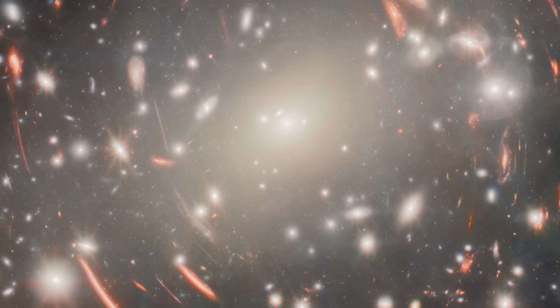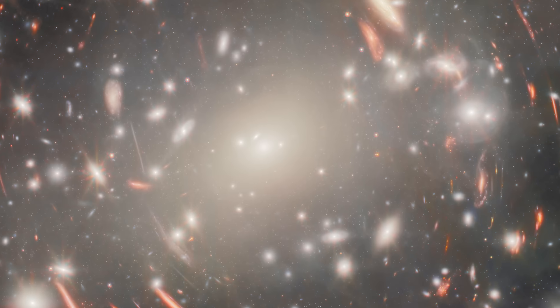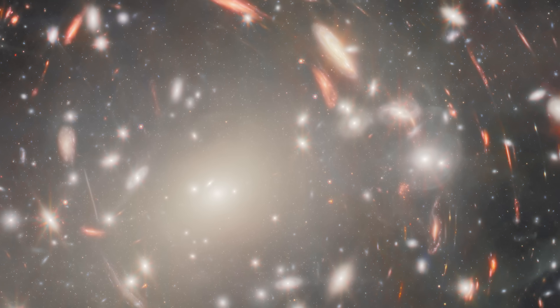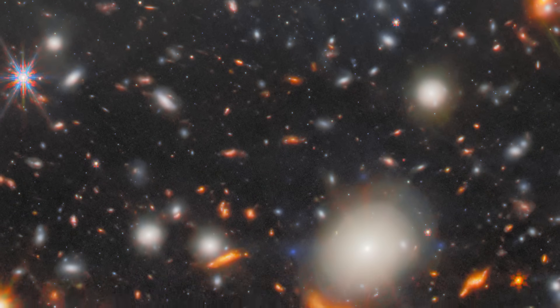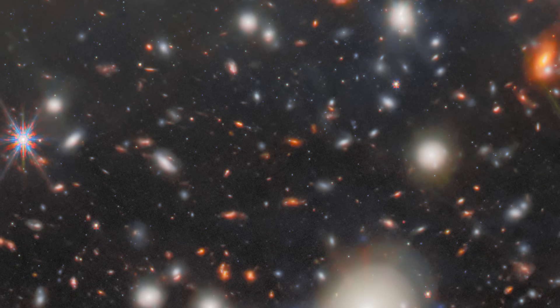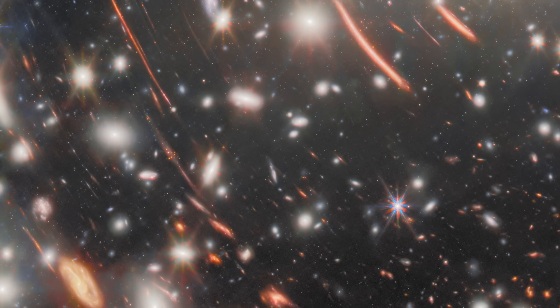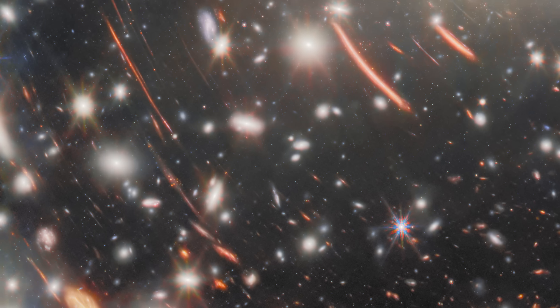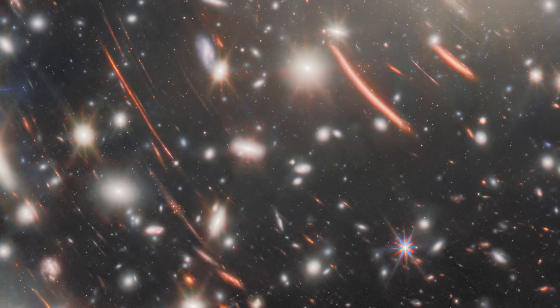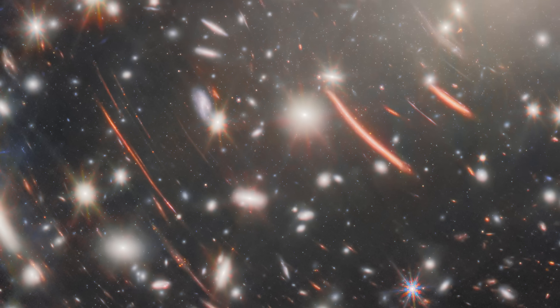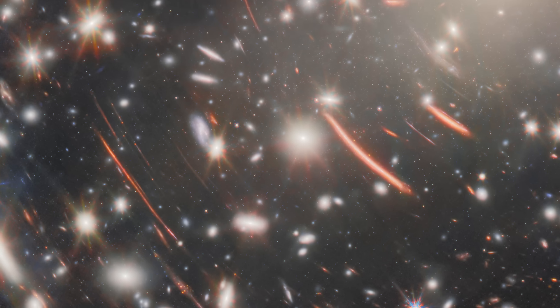At first, Abell S1063 may seem like just a large gathering of galaxies, but it's much more than that. This cluster contains thousands of galaxies packed into a relatively small region of space. Its extreme mass makes it a powerful cosmic lens, bending and magnifying the light from even more distant galaxies behind it, a phenomenon called gravitational lensing.